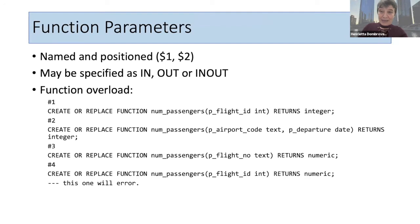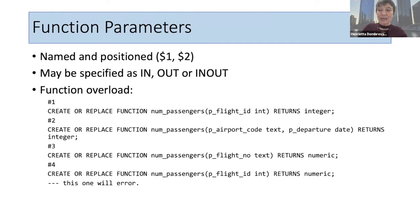Function parameters can be named or positional. Parameters may be specified as IN, OUT, or IN/OUT, although most of the time we use IN parameters and just return the function result. There's also function overloading — you can define a function with the same name but different types, different sets, or different numbers of parameters. For example, in the Postgres Air database, the function num_passengers can take a flight ID, or an airport and departure date, or a flight number as text.